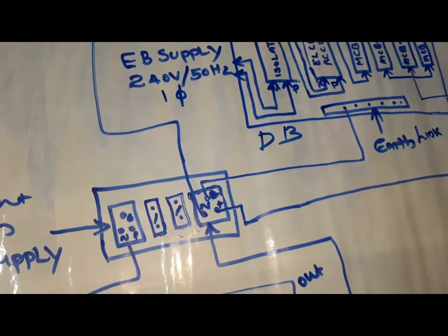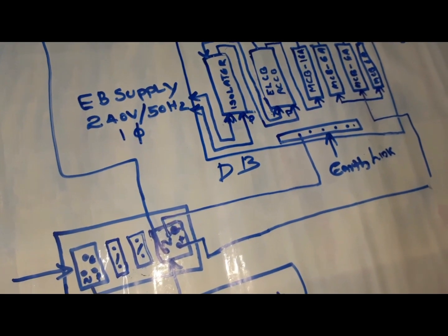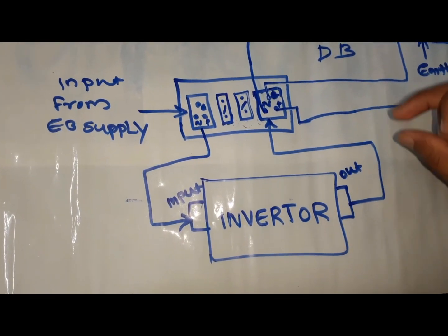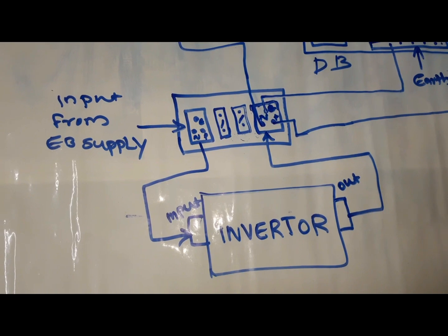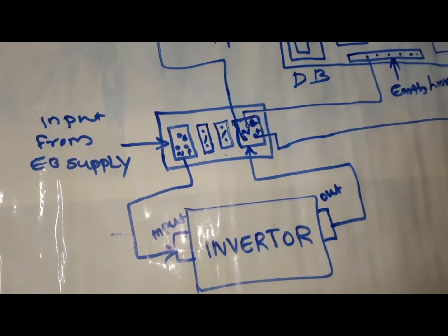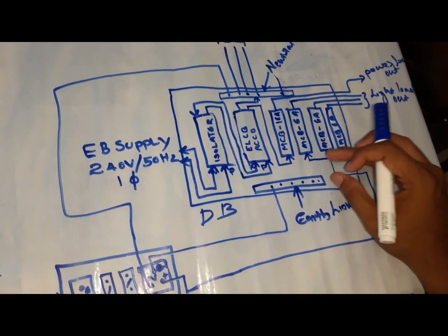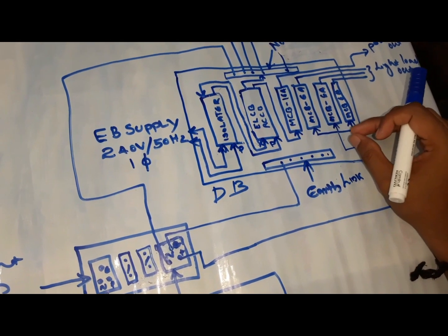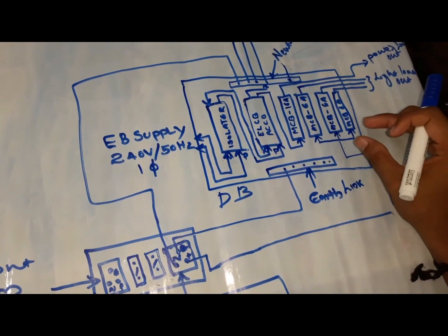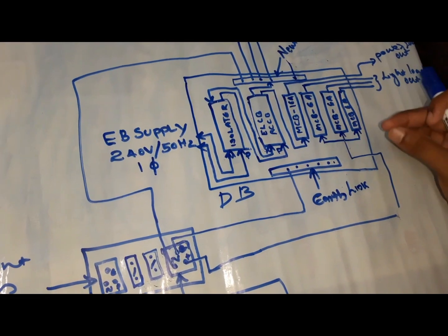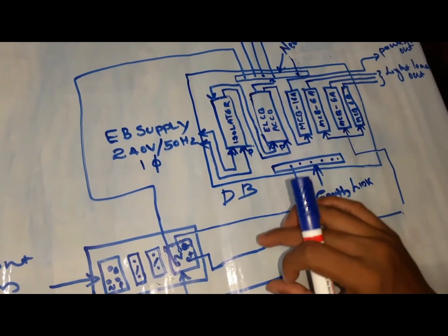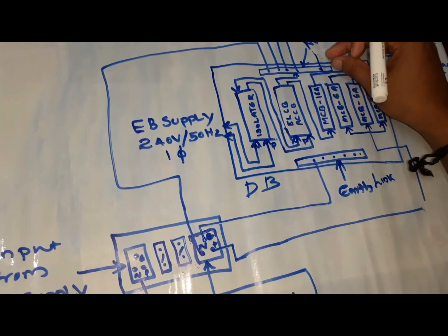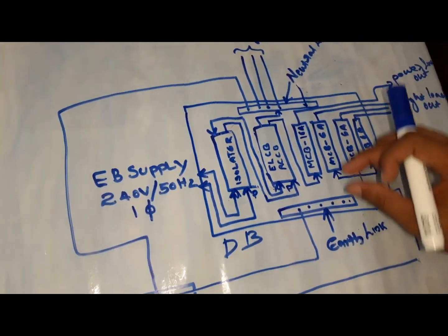We need inverter output and all the inputs. Here we can bring the MCB. If you use an MCB, you can use the MCB. Let's call it neutral — we have a neutral link and we will connect to the neutral link.